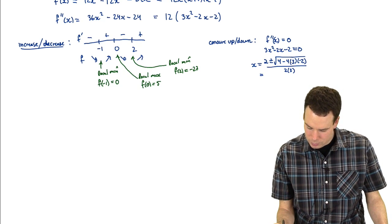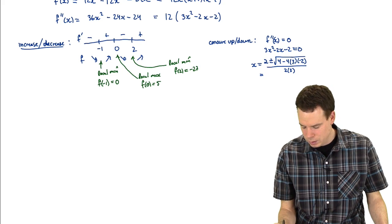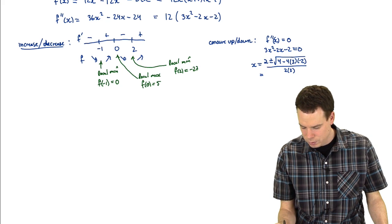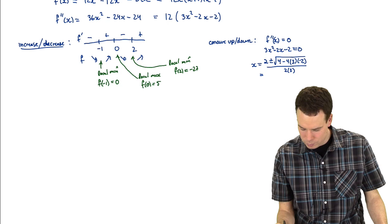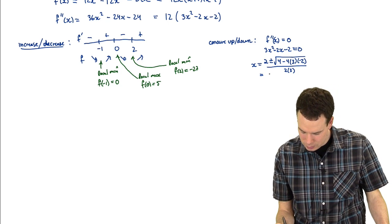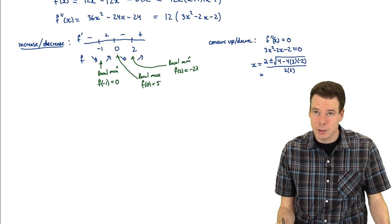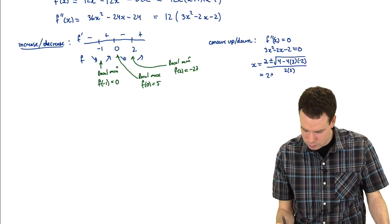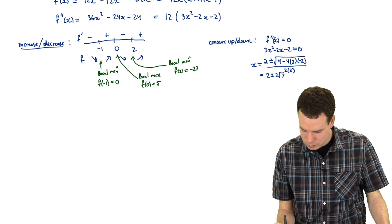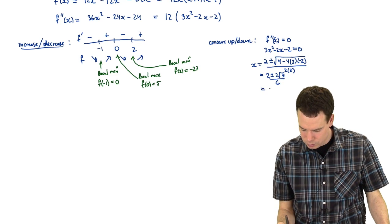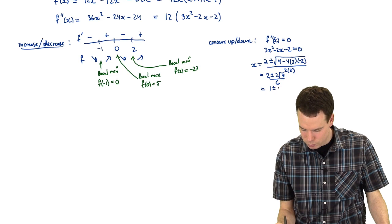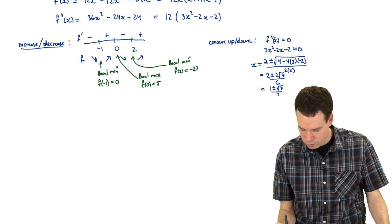We have -2 times -6 times 4, that's 24. 24 + 4 = 28, and 28 = 4 × 7. So that's 2√7 over 6, or in other words (1 ± √7)/3.